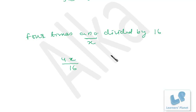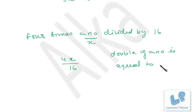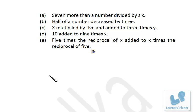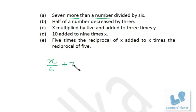Now, double of a number is equal to 50: 2x = 50. Let's practice more problems. 7 more than a number divided by 6: a number is x, divided by 6 is x/6, then 7 more means we add 7, so the expression is x/6 + 7.